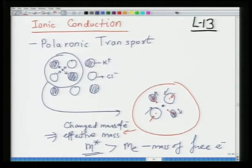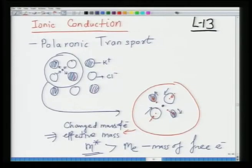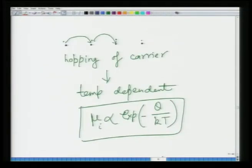Unlike metals and semiconductors where transport happens in the bands — where electrons or holes move in the bands — here in ionic solids it is polaronic transport. A polaron is a charge carrier in the proximity of the lattice, which causes polarization of the lattice, creating a combined entity of lattice ions and the carrier. This proximity also changes the effective mass of the electron, making it heavier than the mass of a free electron. Since it is associated with the lattice, it moves by hopping from one site to another, making transport temperature dependent.